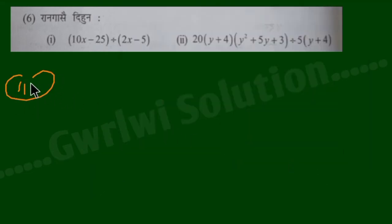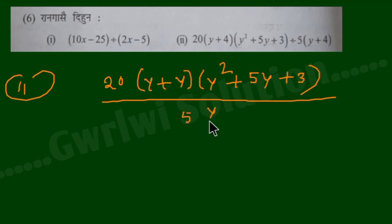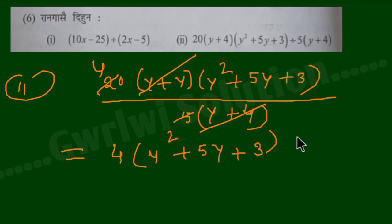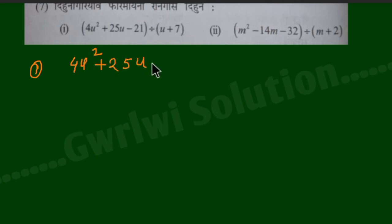The next question: the new number is 20y squared plus 4y squared plus 5y plus 3. So the answer involves 5y plus 4, and the new number is 20y plus 4. The original number is 20. So the number is 20y squared plus 5y plus 3. The next question is number 6: 4u squared minus 25u minus 21, divided by u plus 7.